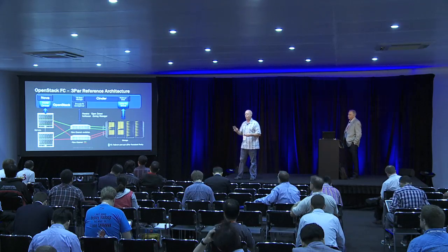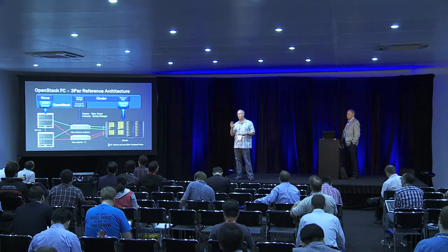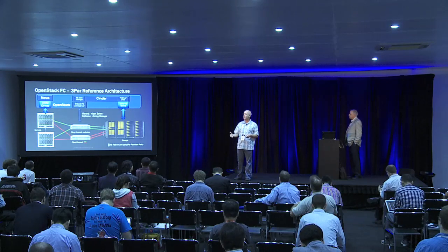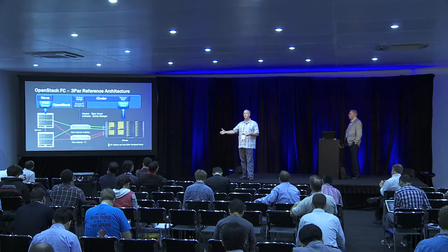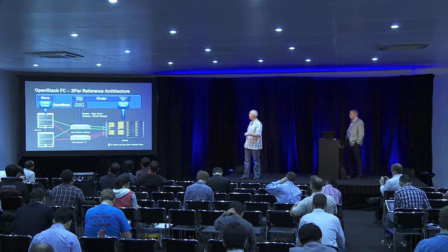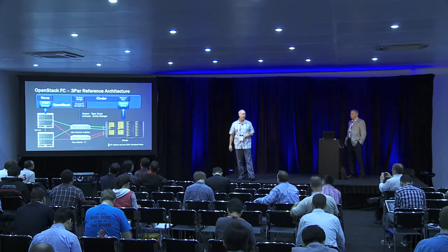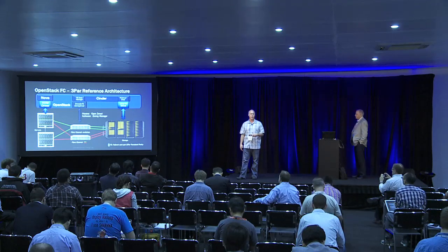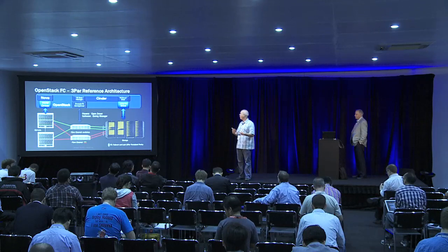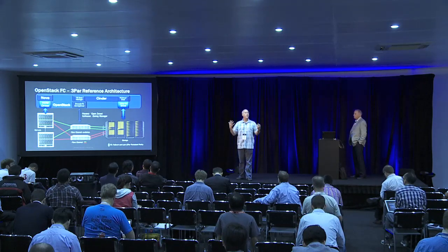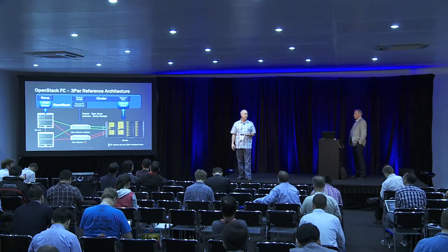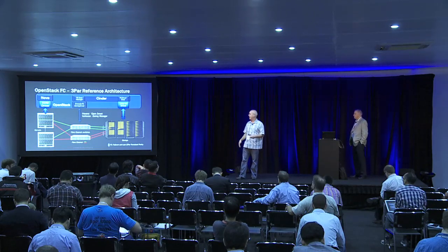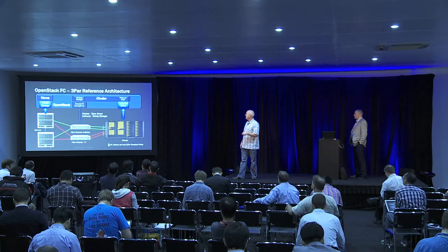Work on the zoning manager was being done during the Havana timeframe. It didn't get in at the freeze for Havana. The current goal is to bring that in during Icehouse in the first sprint, and you should have it there by the end of Icehouse. What that brings in is the Fibre Channel zoning manager, where we can now have the ability for the fabric to be zoned as volumes are attached to the host. Previously in Grizzly and Havana, we required that the SAN itself was in an open zone state — there was no active zoning going on unless you happened to have a newer array type that does target-based zoning.